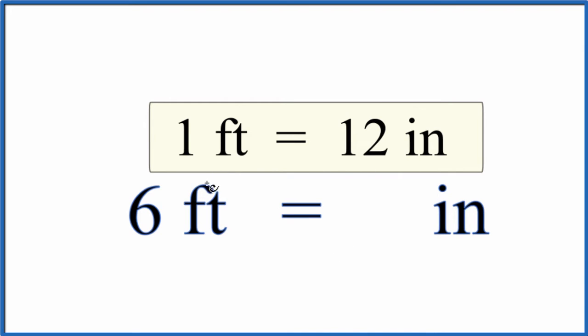Then if you think about it, for every one foot we have 12 inches. We have six feet, we just have six times 12. Six times 12 is 72. So six feet equals 72 inches.